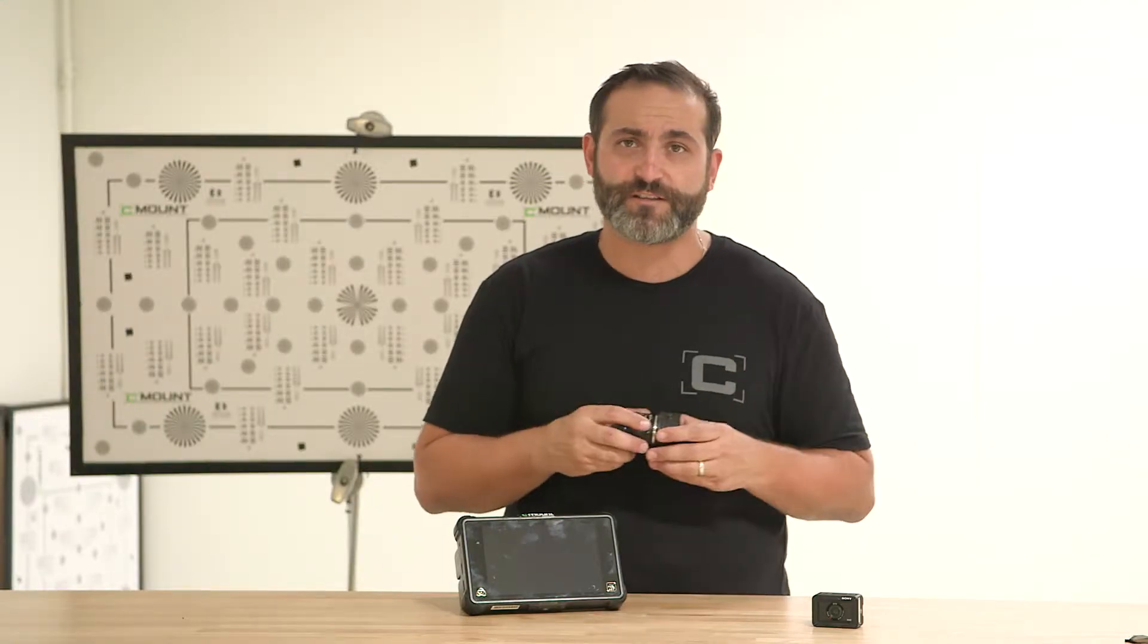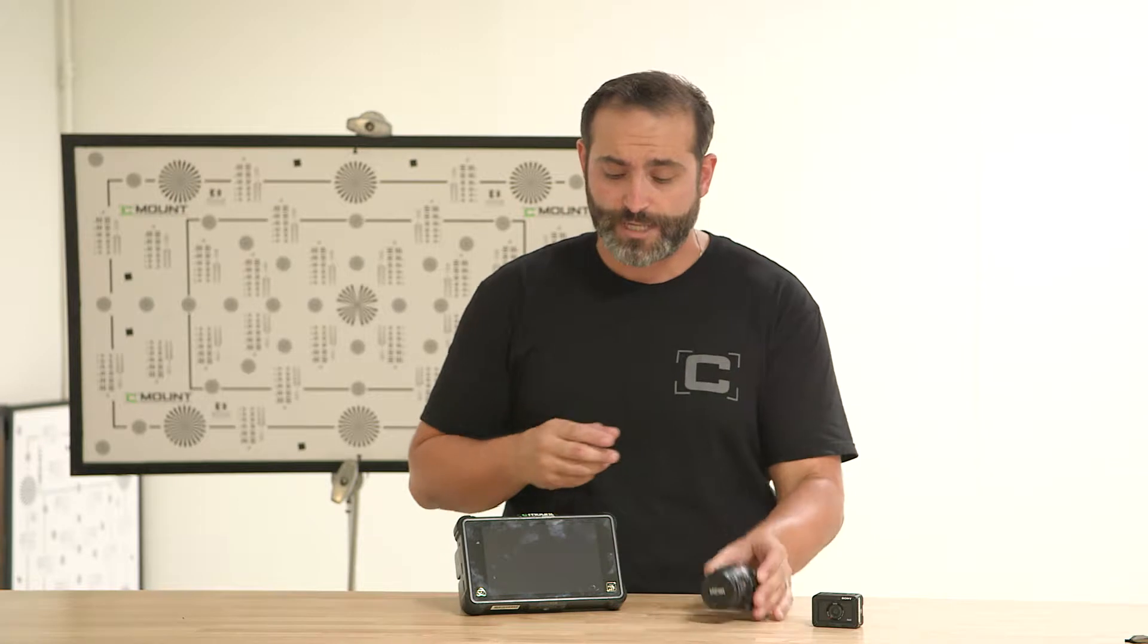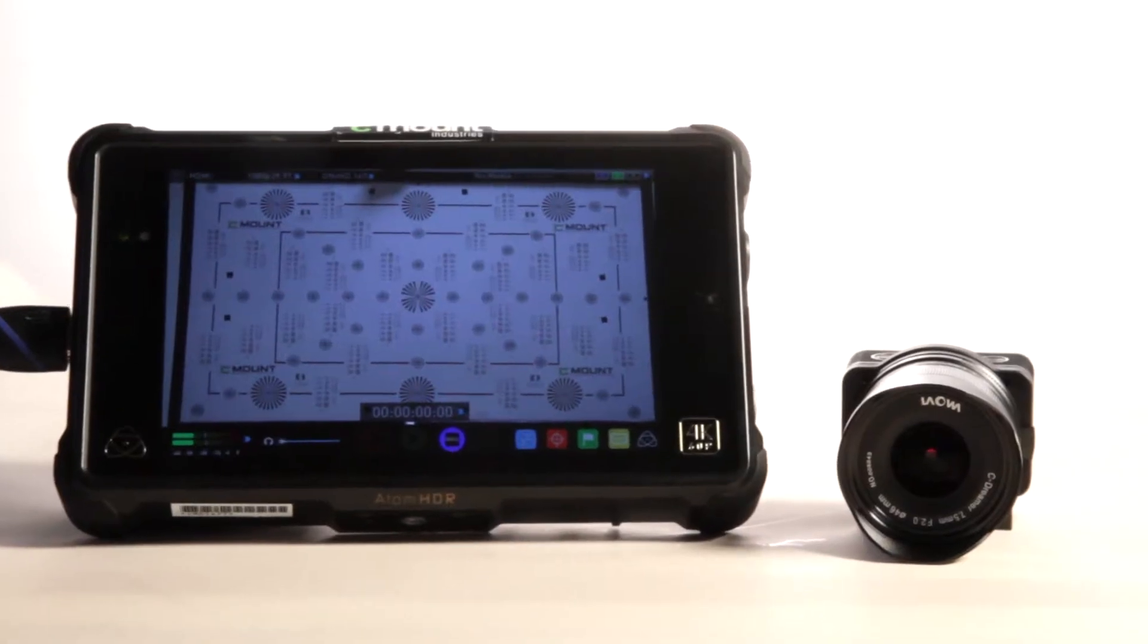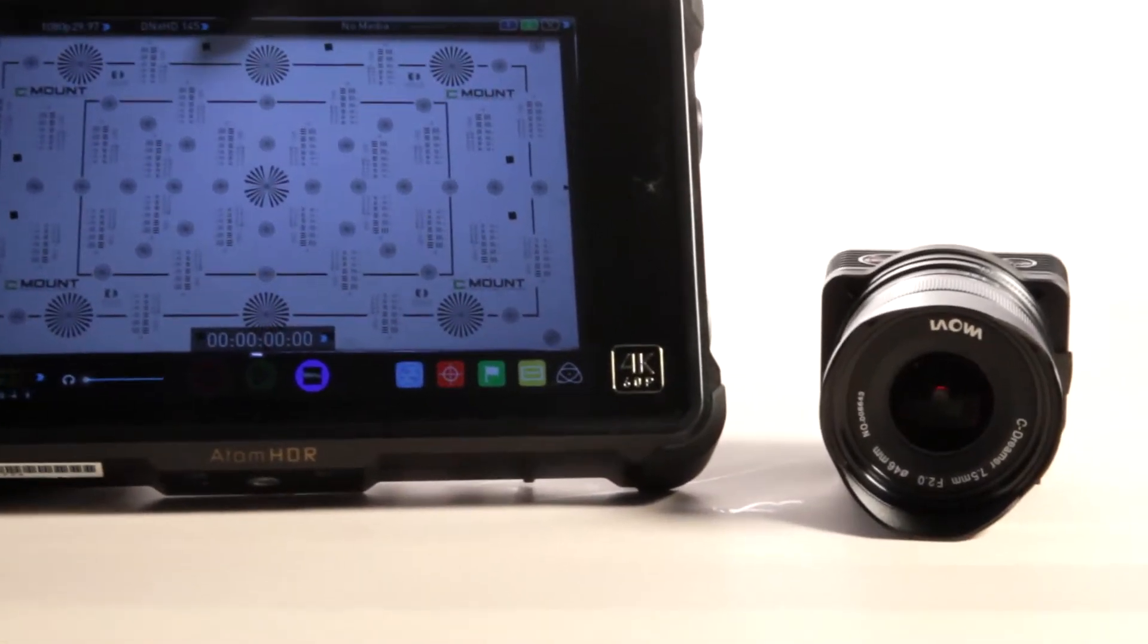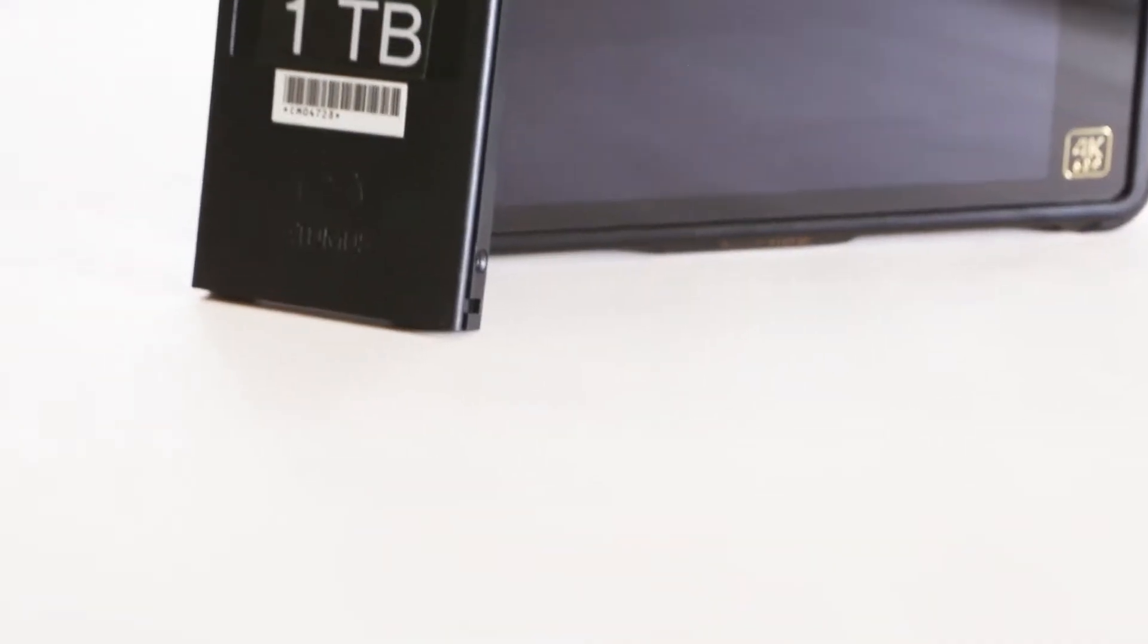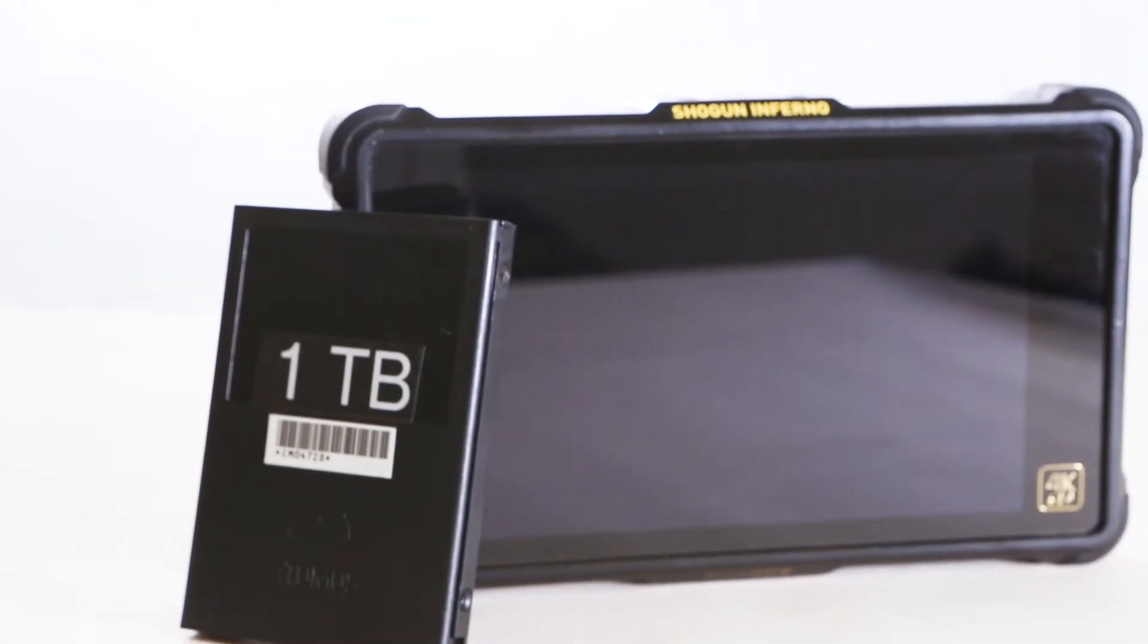It lets you put on all sorts of different manual lenses you can control. It also comes with a Shogun recorder, so you can get your 4K out of the camera. I believe it outputs 422 4K out of the HDMI, as well as a 1TB drive with the Shogun.